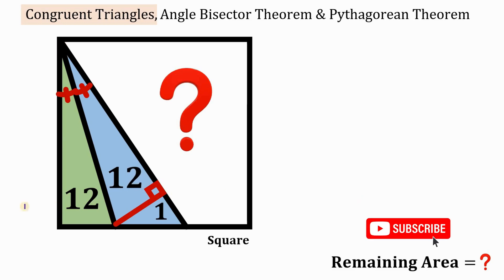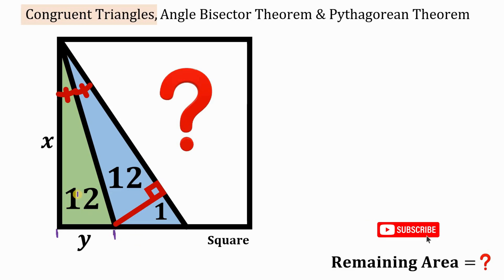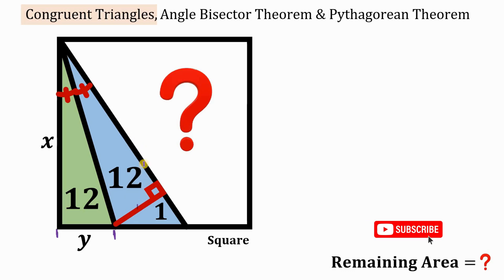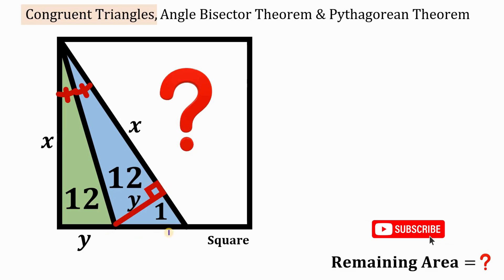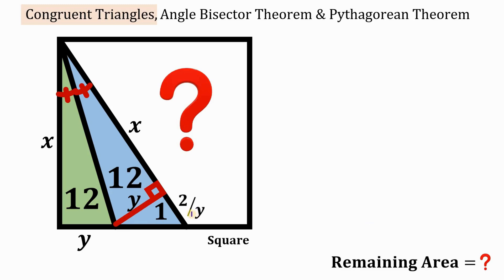Let's call the side of the square as x and this base as y. Since the two right triangles are congruent, the base of this triangle is y and the altitude is x. For the small triangle with area 1 square unit, the altitude is y, so the base equals 2/y, giving us one-half times base times height equals 1 square unit.